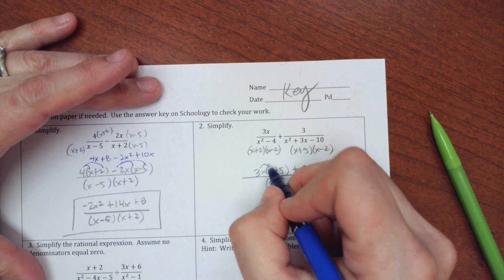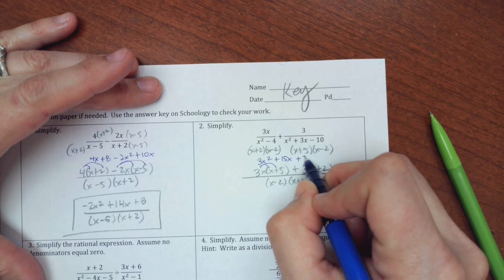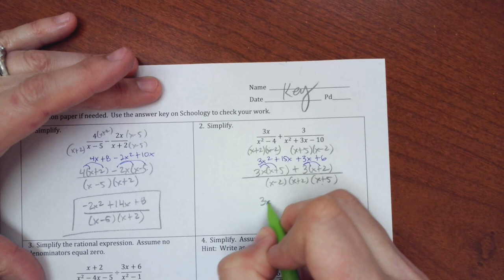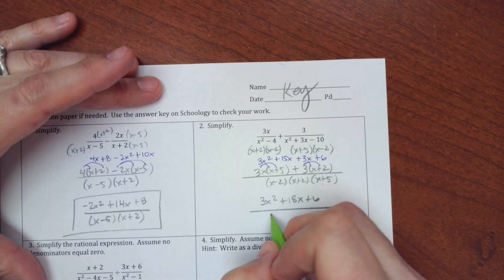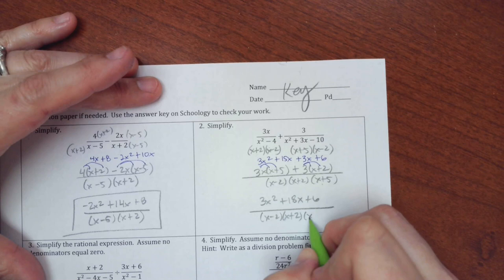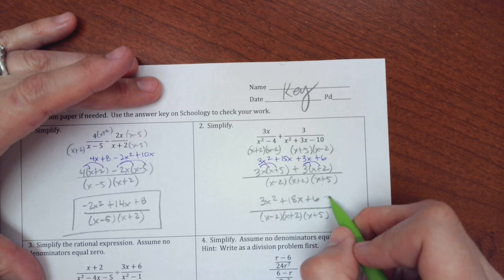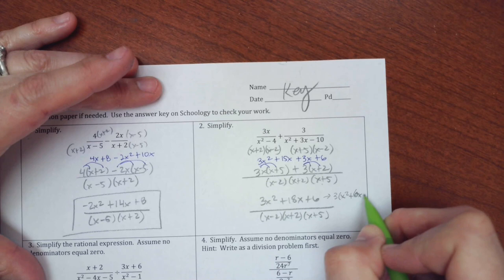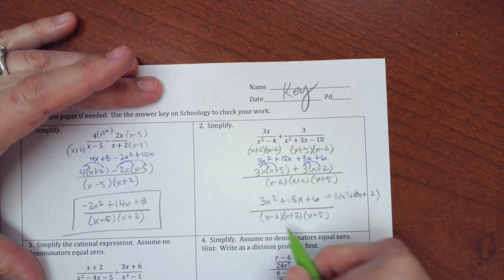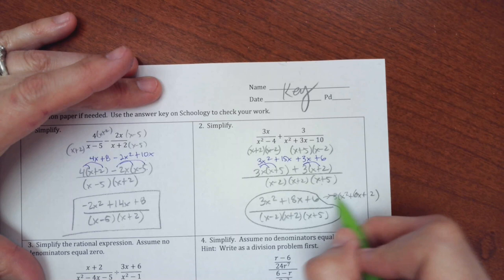So I get 3x squared plus 15x, and then here plus 3x plus 6. So simplify that. I get 3x squared plus 18x plus 6. And on the bottom, x minus 2, x plus 2, and x plus 5. Now I do notice that all these divide by 3, so let me just think for a second. If I take a 3 out, that'd be x squared plus 6x plus 2. Nothing that makes 2 makes 6, so this can't factor anymore. And frankly, then I can't cancel it with anything. So that's why I know I'm finished here.